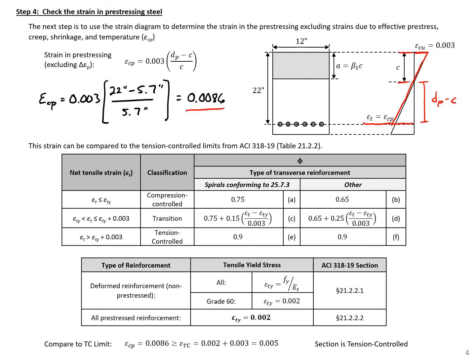We compare this to the tension control limit from ACI, which equals epsilon ty plus 0.003. ACI defines epsilon ty as 0.002 for all prestress reinforcement, so 0.002 plus 0.003 gives us a tension-controlled strain limit of 0.005. Our calculated strain of 0.0086 exceeds this, confirming the section is tension-controlled, so we use a phi factor of 0.9.